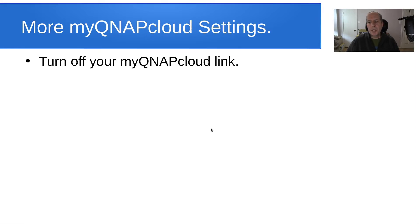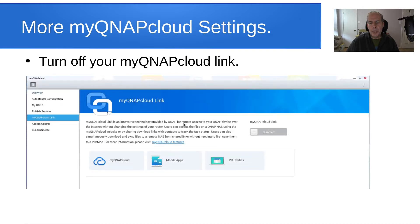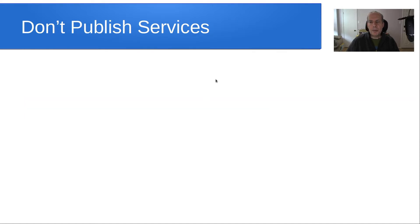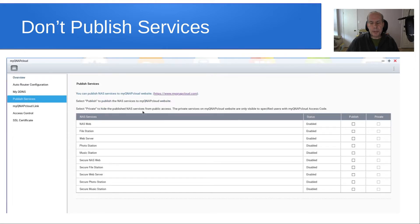Finally, you want to turn off your myQNAPcloud link. The myQNAPcloud link has been an attack vector in several QNAP NAS systems because it offers services outside of your local area network. In the myQNAPcloud application, go to myQNAPcloud link, disable it, and save. Then go down to publish services, deselect everything in the publish box, and save that as well.